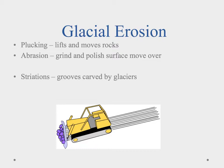Glaciers are nature's bulldozer, and glacial erosion is caused by two different processes. We can have plucking, which is actually the lifting and moving of rocks, and then we can have abrasion, which is using things trapped under the ice to grind and polish the surface it goes over. One of the key things we'll notice are striations — these grooves carved by glaciers. As glaciers move, sometimes they'll carry something large enough that it'll leave a groove through the surface, showing us where they were and how they moved.